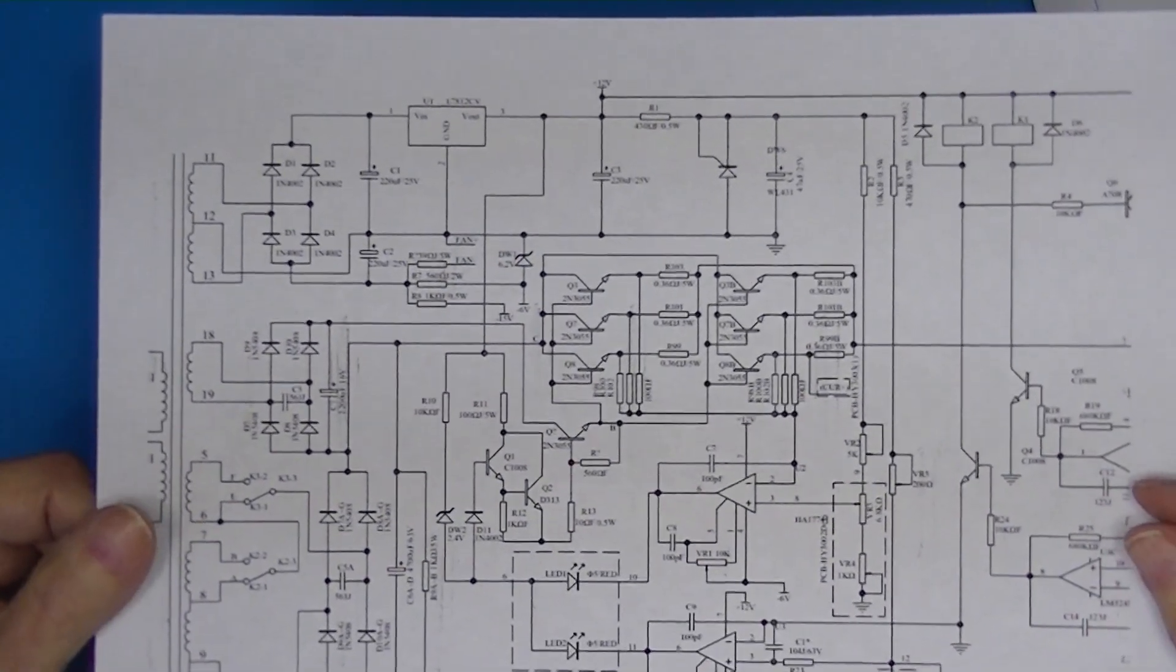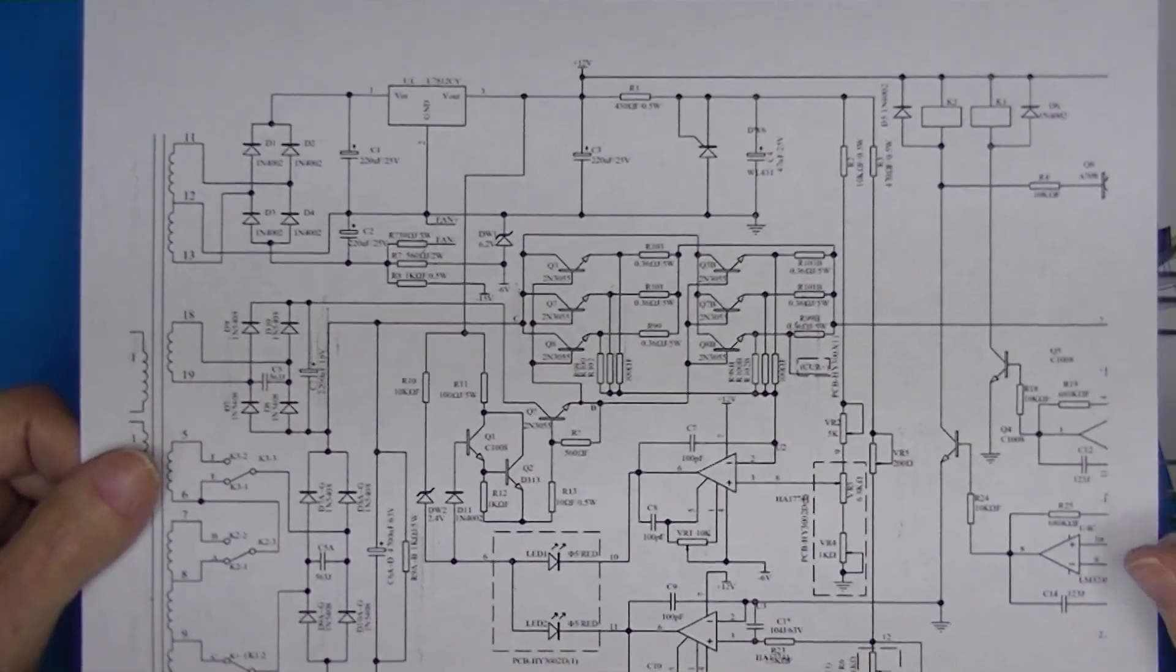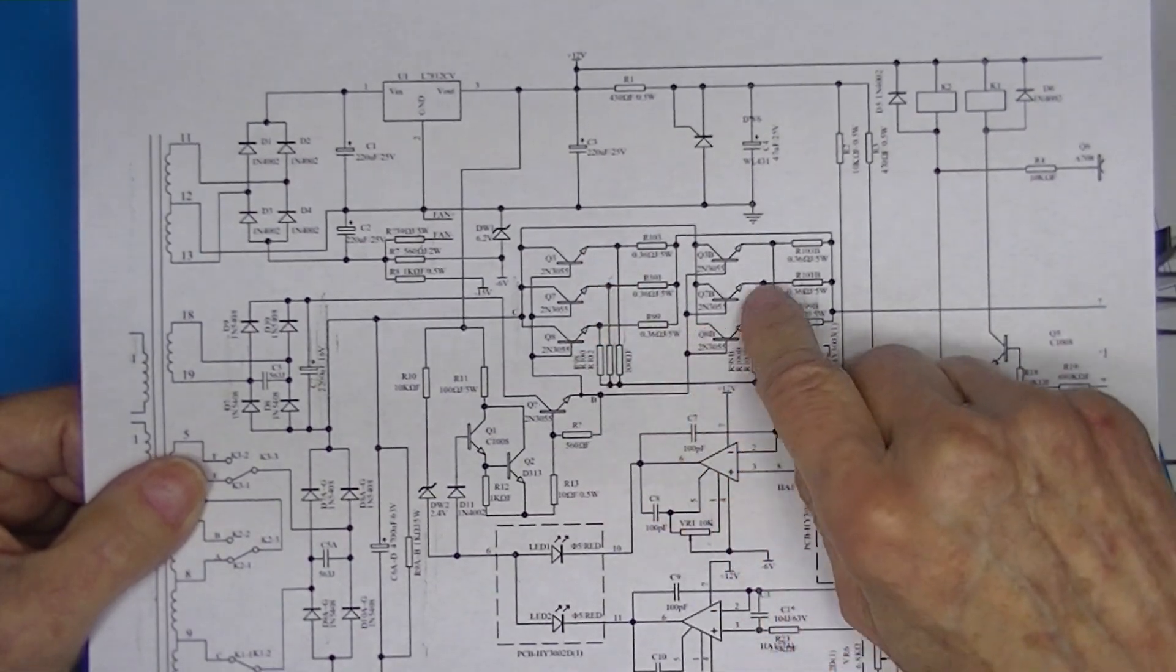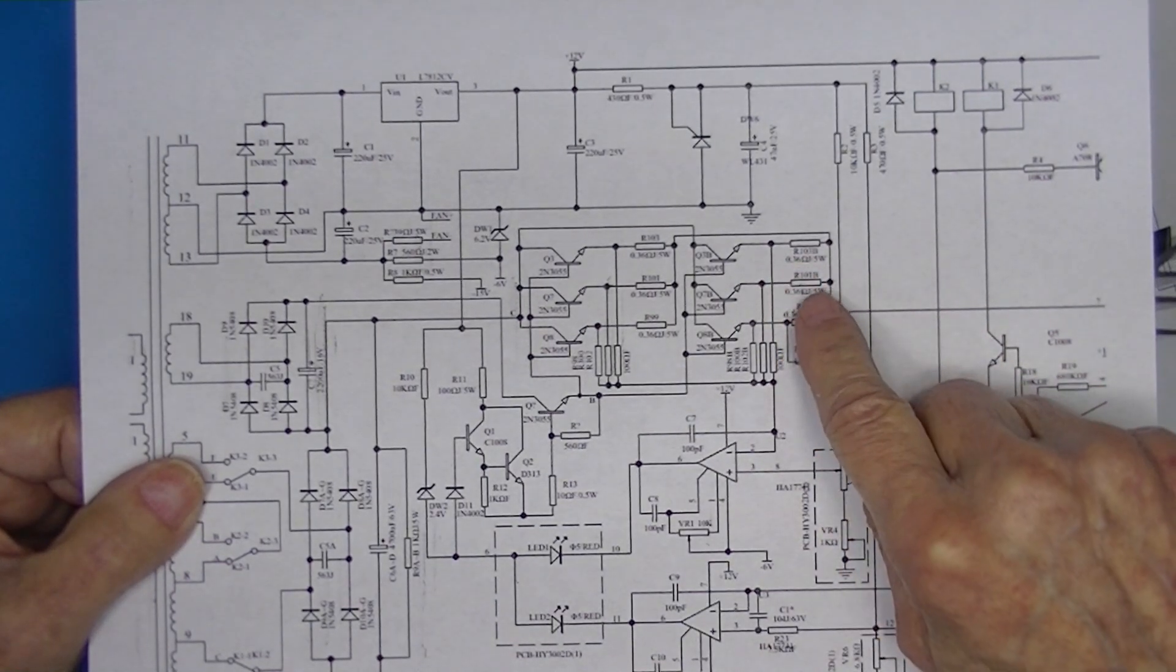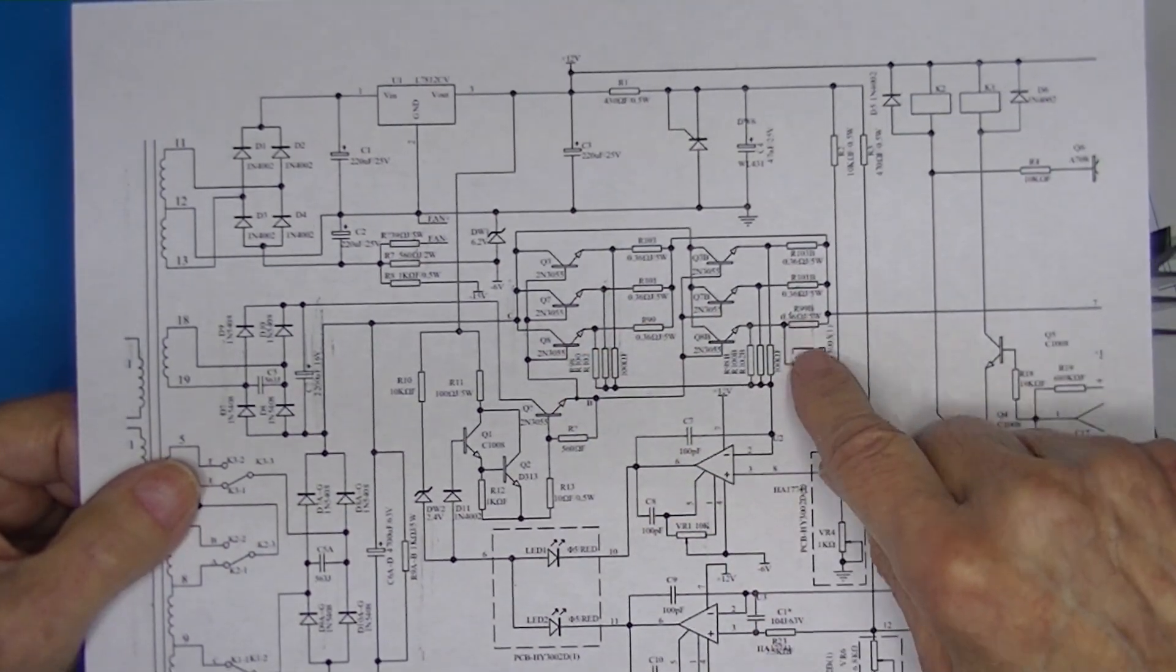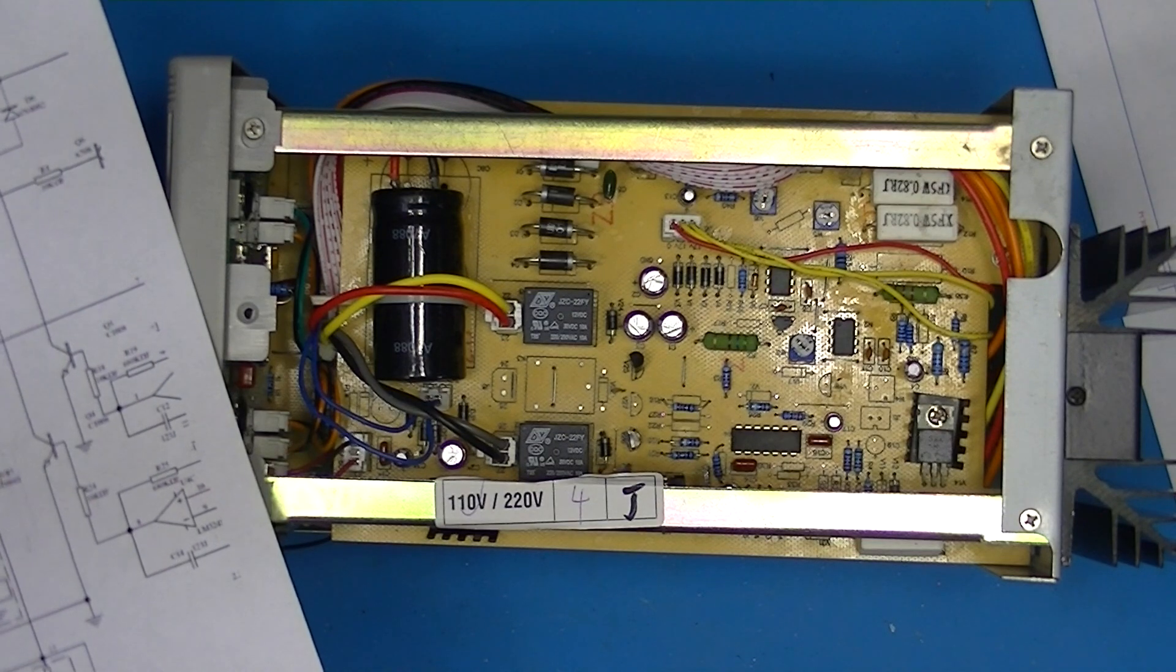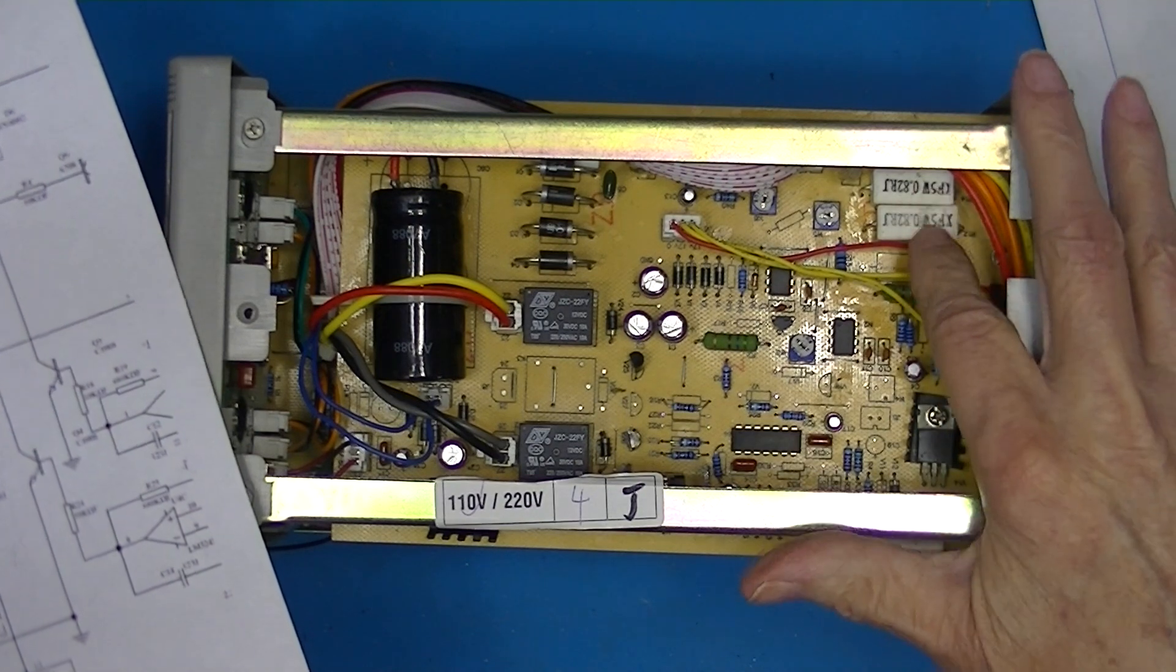Now this circuit board is not identical to either the 5 amp unit or the 10 amp unit. However, for example, in a 10 amp unit we have six parallel pass transistors and six current sensing resistors. Here we have two current sensing resistors with room for a third. So maybe a 5 amp supply has three.